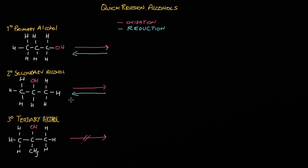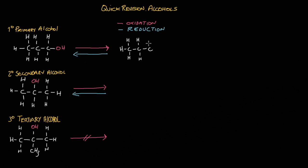We can oxidise a primary alcohol to give an aldehyde. The aldehyde produced will have a carbonyl group right at the end of the chain, which signifies an aldehyde. Aldehydes always have a carbonyl group at the end of the chain, so we produce an aldehyde from the oxidation of a primary alcohol.